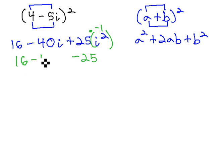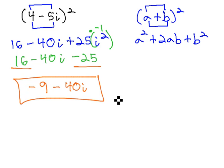Our expression now reads 16 minus 40i, minus 25. We can finish by combining the like terms, 16 minus 25 is negative 9, minus 40i for our final solution.